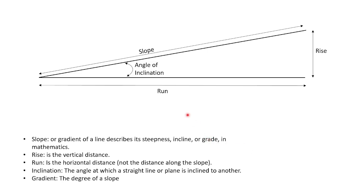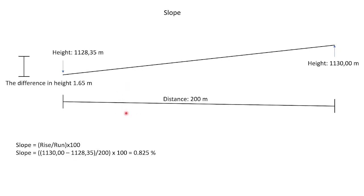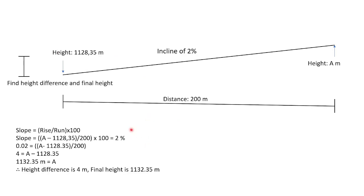Some basic explanations on inclines and declines: your slope is the gradient, your rise is the vertical distance, and your run is your horizontal distance. Inclination is the angle at which a straight line or plane is inclined to another, and the gradient is the degree of the slope. When calculating slope, it is rise over run. Where you have two heights, you can say one height minus the other divided by the distance times 100 to get a percentage. You can also work with a given height and an incline of 2% — over a 200 metre section a 2% incline will result in a calculated height at the end.